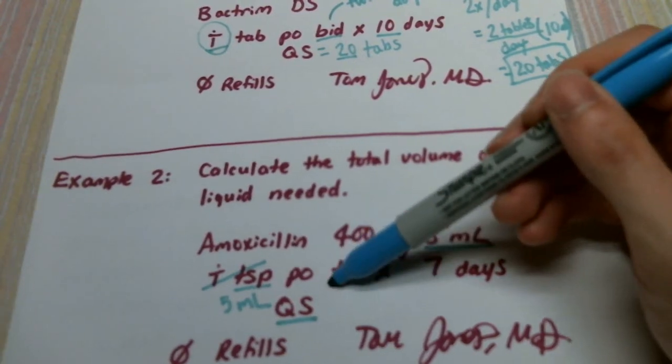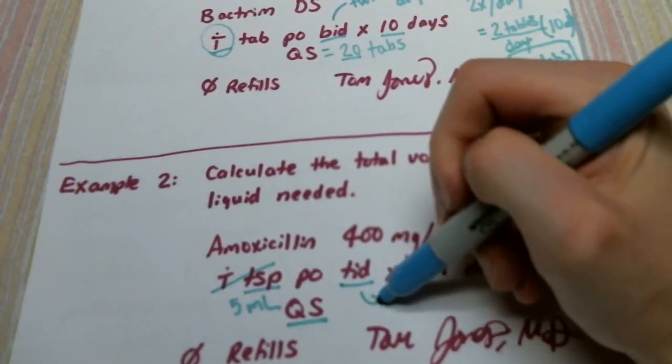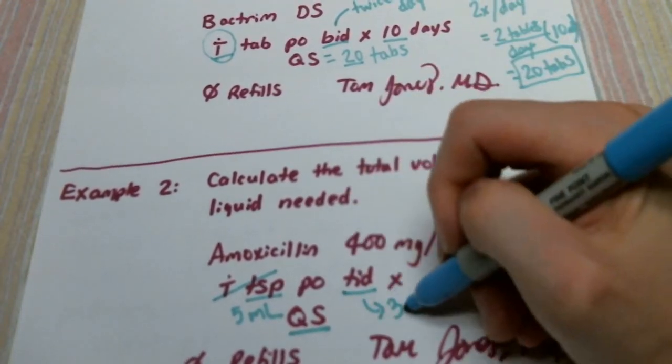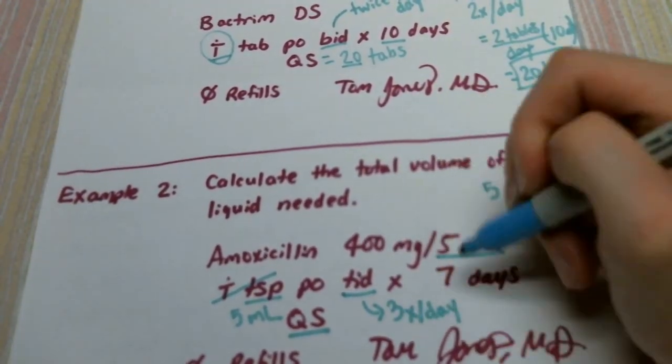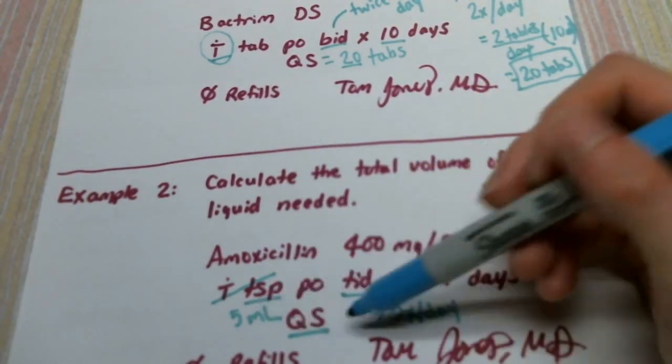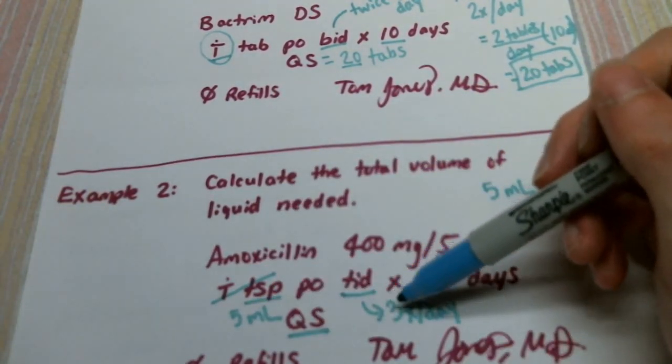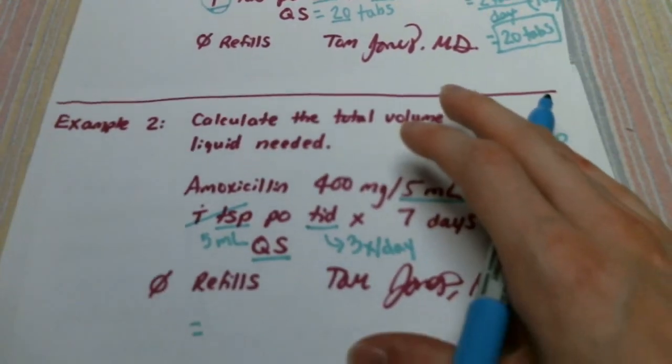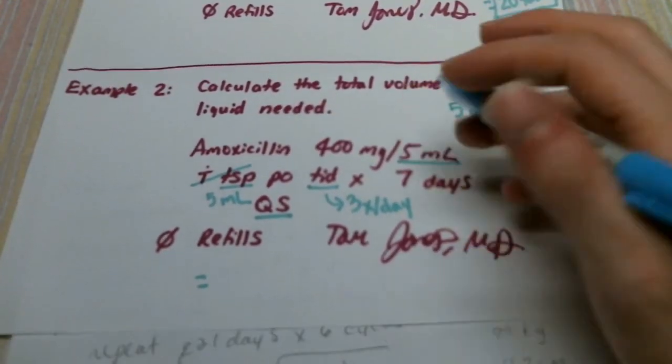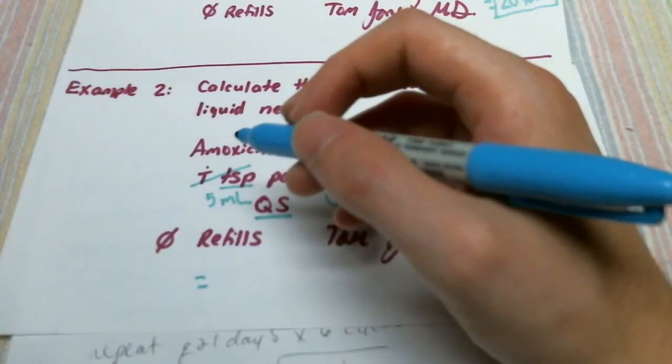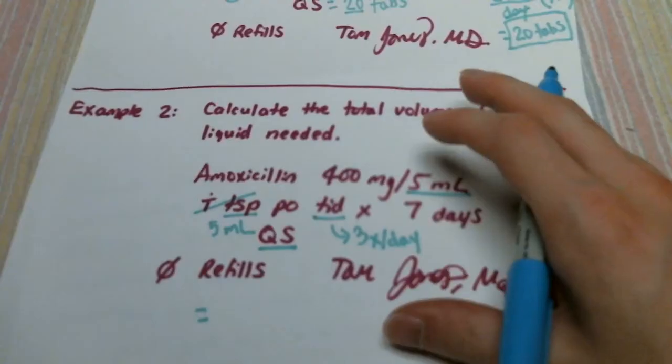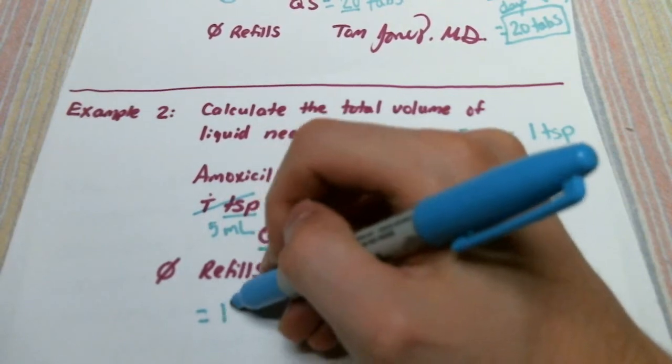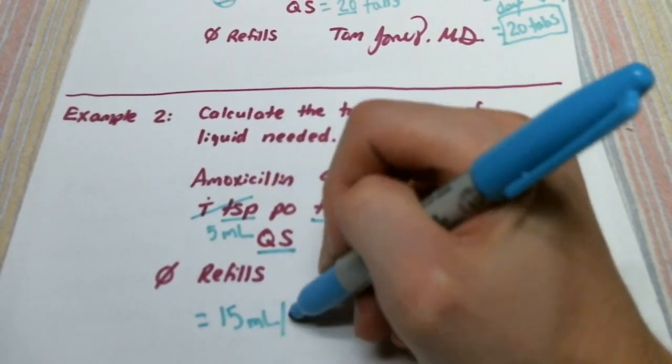So we can substitute the one teaspoon for five milliliters. Remember TID is three times a day. So five milliliters three times a day is fifteen milliliters per day.